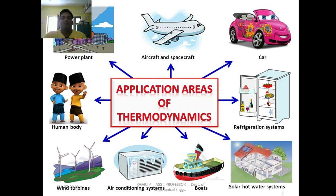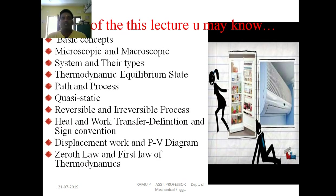Applications include domestic refrigeration systems, automobile engines, and how heat energy is converted into mechanical energy. During heat transformation, we study thermodynamic properties and how they change. We also study how refrigeration systems function, their basic principles, and how power plants run — what energy transformations are involved. By the end of this lecture, you will know the basic concepts of engineering thermodynamics, including microscopic and macroscopic approaches, system types, thermodynamic equilibrium, path and process functions, quasi-static and reversible/irreversible processes, heat and work transfer, PV diagrams, and the first law of thermodynamics.